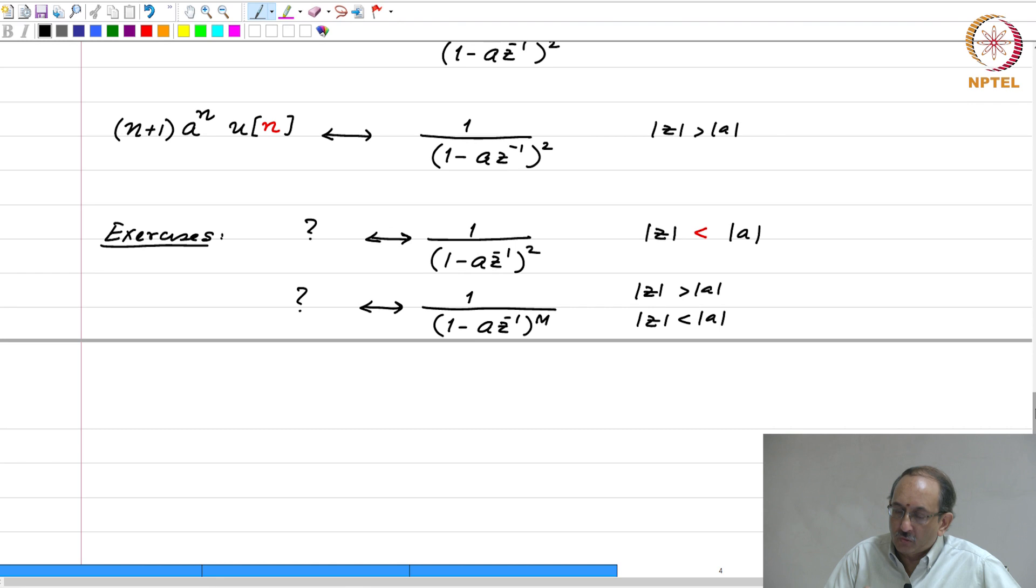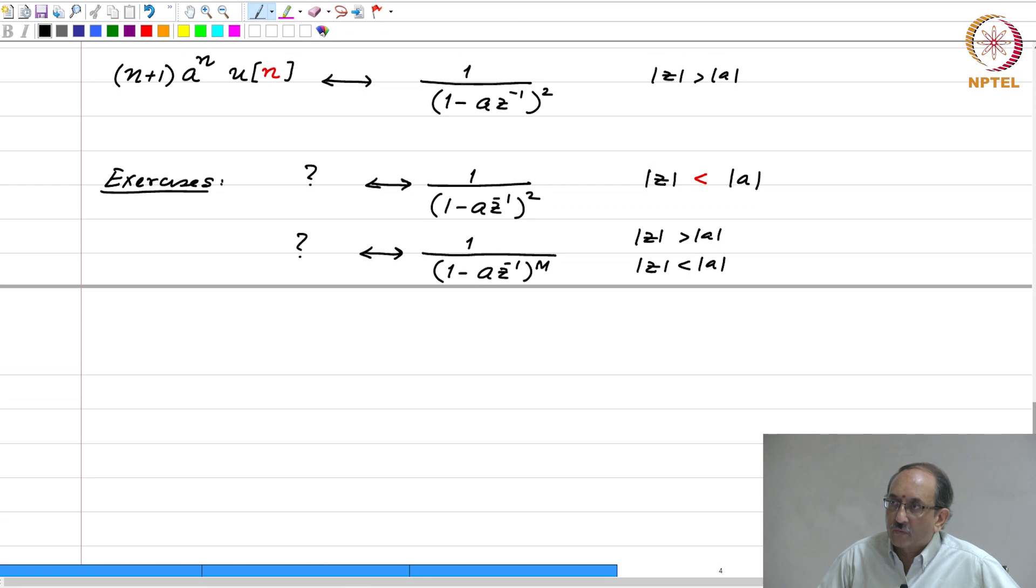One thing that you must have learnt about the transform in the Laplace case, it is a complex function of a complex variable. What is one important property that this Laplace possesses? The same property is true for z transform. The Laplace transform is an analytic function, which means it satisfies the Cauchy-Riemann equations. Is this familiar to you? If the function is analytic, it will satisfy the Cauchy-Riemann equations. No, it has not been taught ok. If the function is analytic, in the region of convergence, this is infinitely differentiable. Therefore, you can apply this any number of times.